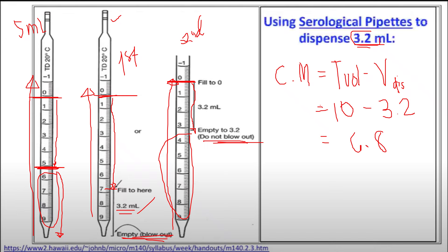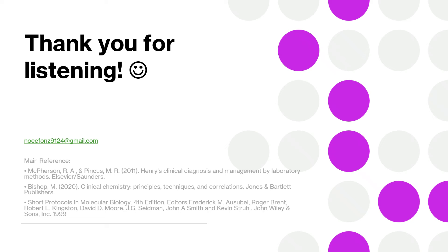Make sure you do not forget the different types of pipettes. Two continuous rings indicate a blowout type of pipette. Thank you so much for listening. These are the references used for this lecture. For questions or clarifications, you may message through the course account, and you can search YouTube for more videos on pipetting techniques.